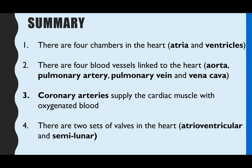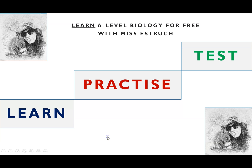In summary: there are four key chambers — left and right atrium and left and right ventricles. There are four major blood vessels attached to the heart: the aorta, pulmonary artery, pulmonary vein, and vena cava. The coronary arteries are on the outside of the heart and supply the cardiac muscle with oxygenated blood. There are two sets of valves: the atrioventricular valves and the semilunar valves. To find out about the cardiac cycle, click the link on the end screen, and head to missestrich.com for questions.